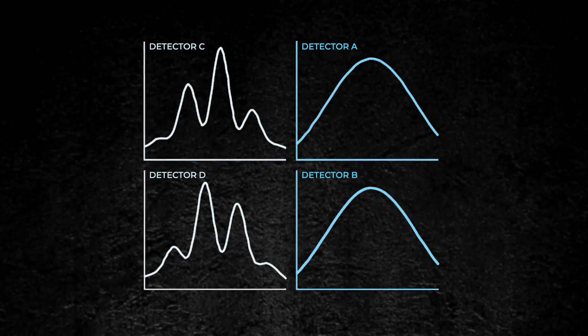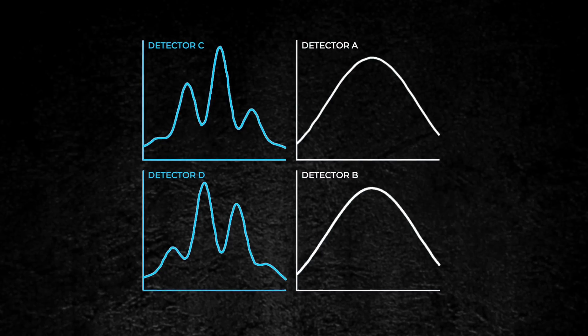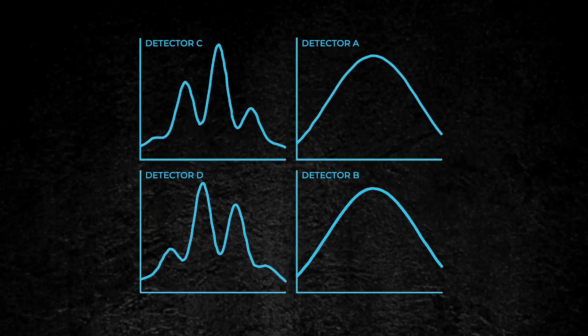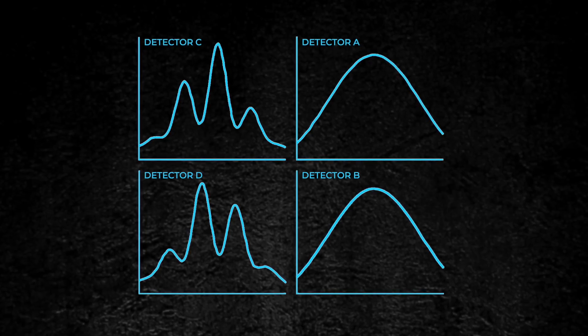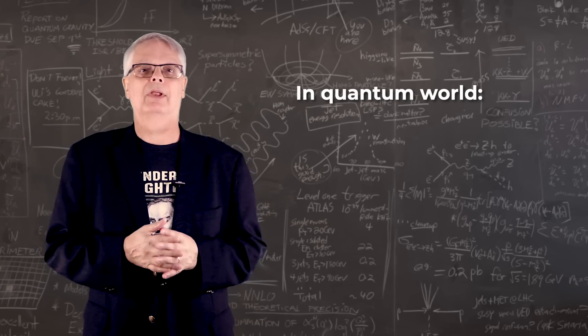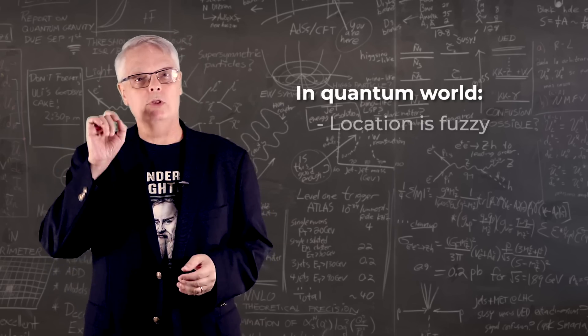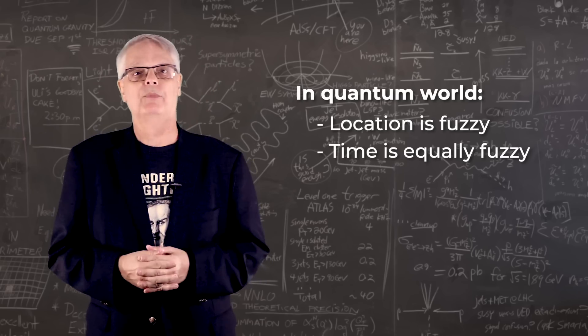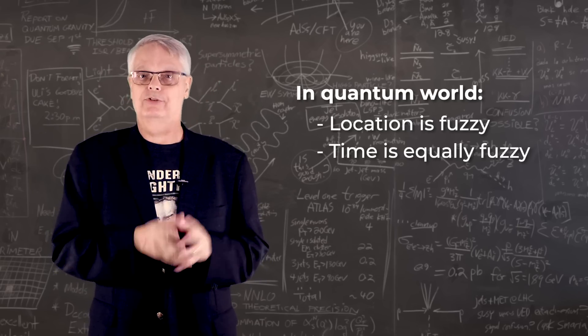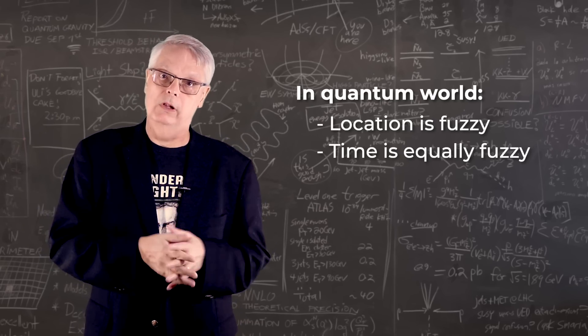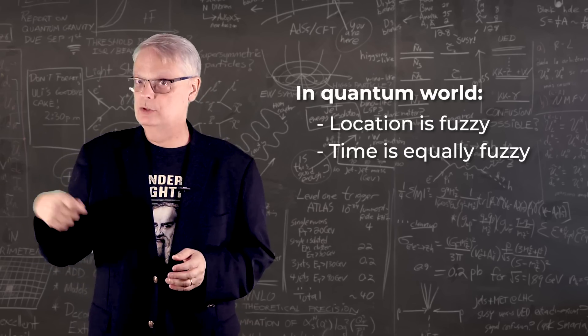And detection in A, B, C and D all happen after the interference or particle pattern is created. This bizarreness implies that in the quantum world, both location and time don't act like they do in our familiar world. Quantum mechanics can be considered non-local because of the cousin photons and non-temporal because the detection somehow changes the past.